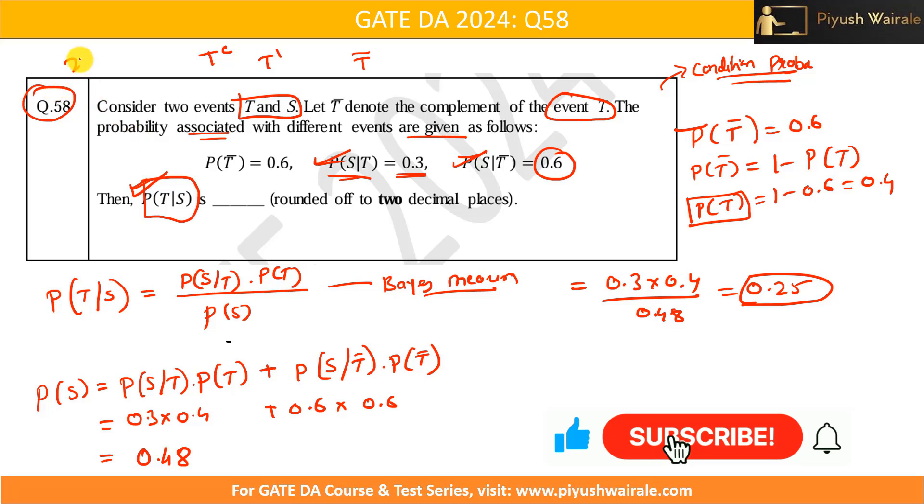It was asked for two marks, but based on simple Bayes theorem, simple formula is there, right? So, whatever we have discussed up till now, that will be more than enough to solve this type of question. And let me tell you, next year also, you can expect one question based on Bayes theorem, law of total probability, okay? Or we can say conditional probability.